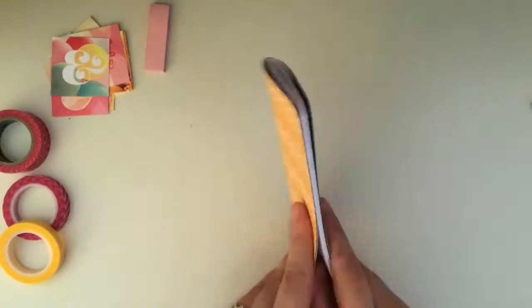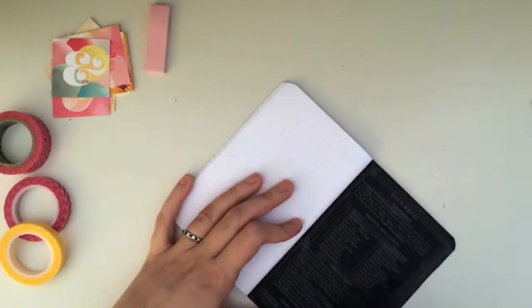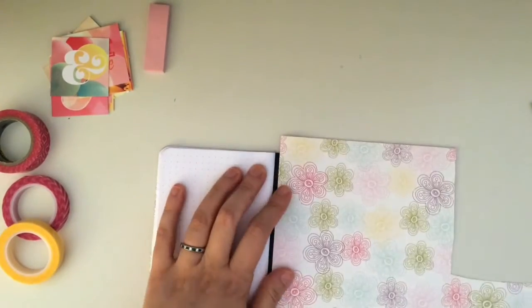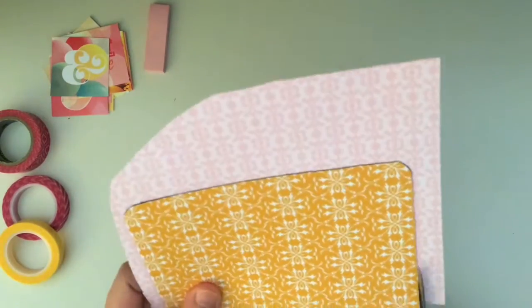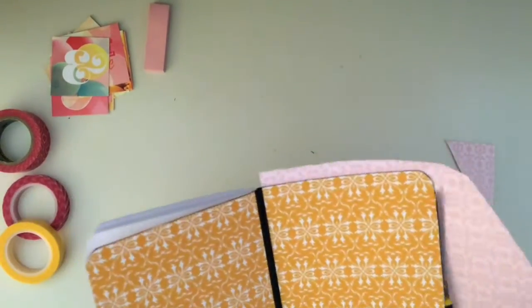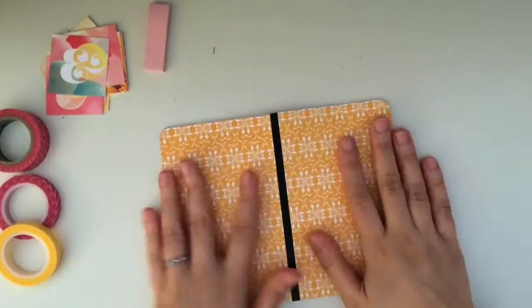If you really wanted to, you could save those scraps for something else, but I don't. And then once I've got the outside cover and the inside cover done, I want to do something about the spine because I don't want to keep that black color there that's from the original journal.